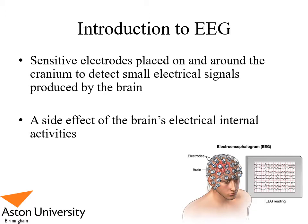So what is EEG? Electroencephalography is when you place sensitive electrodes on and around the cranium to detect small electrical signals that originate from the brain — a side effect of the brain's electrical internal activities.